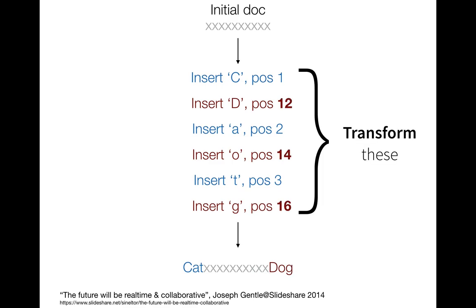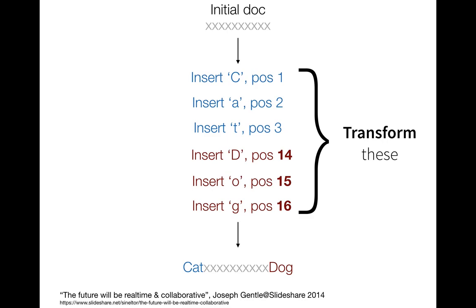What we need to do is transform the incoming operations. We first apply 'insert C', then we see a new operation coming in — 'insert D' — that was performed on the original version. We know the original version is not valid yet, so we need to transform this operation — operational transforms. We go from position 11 to position 12, and now it works out perfectly. We need a function that can transform these operations so they preserve the intent of the authors.